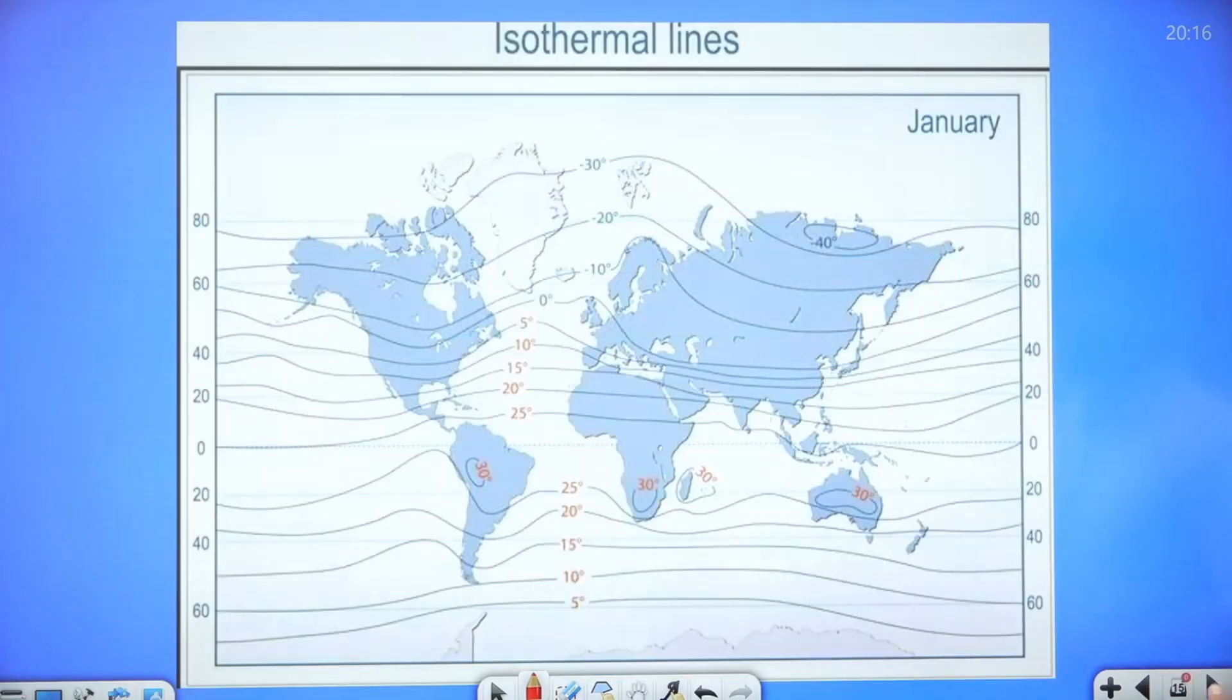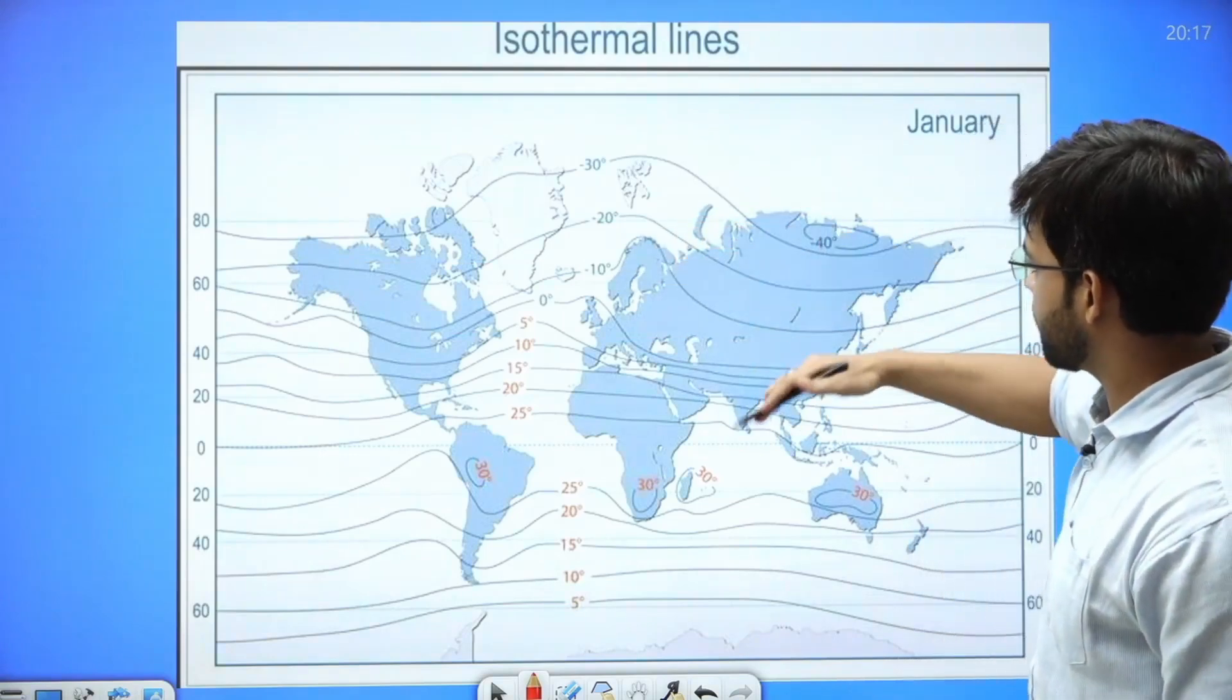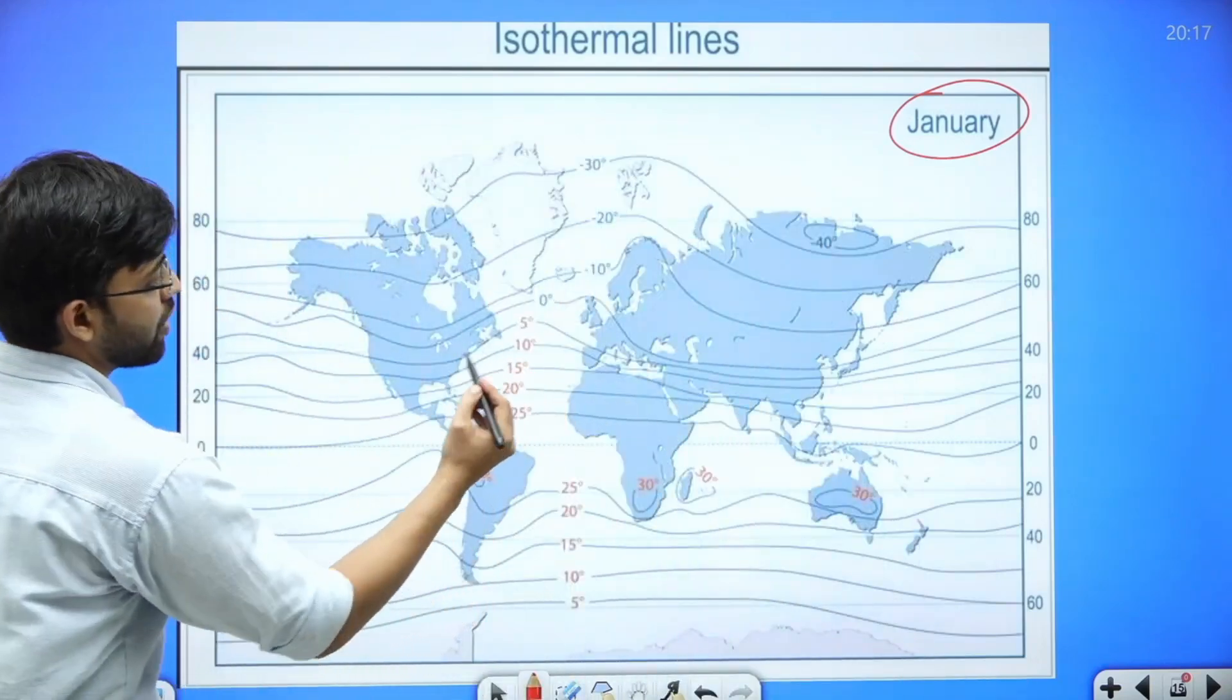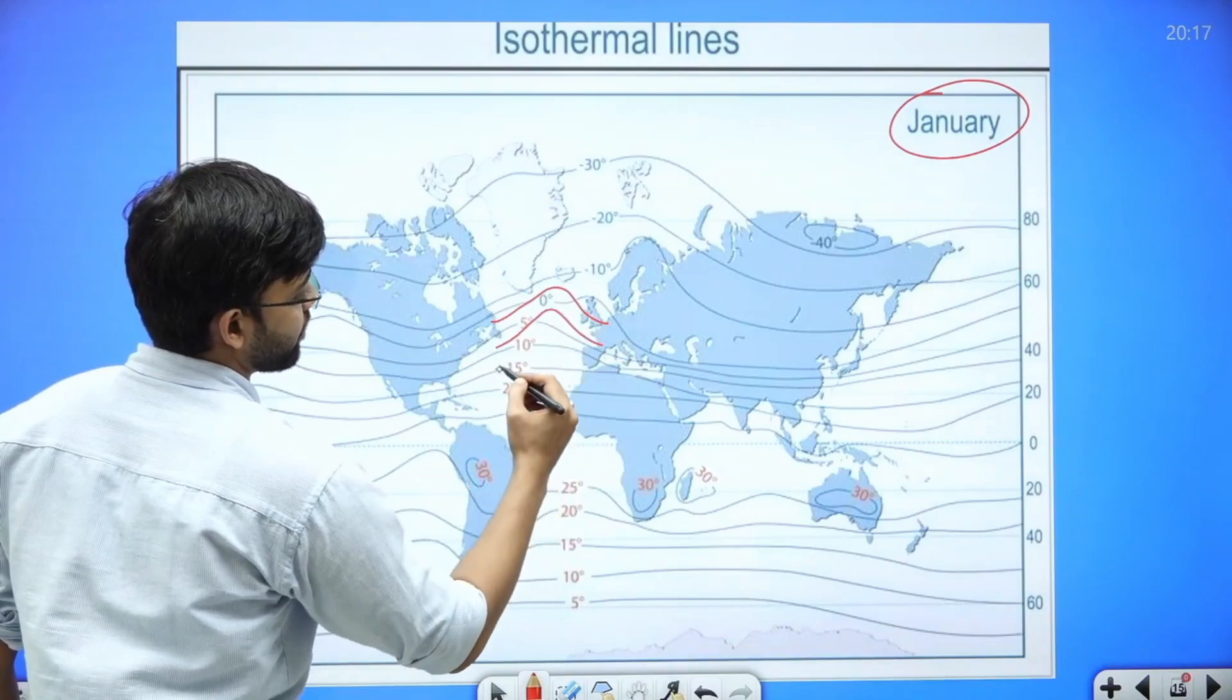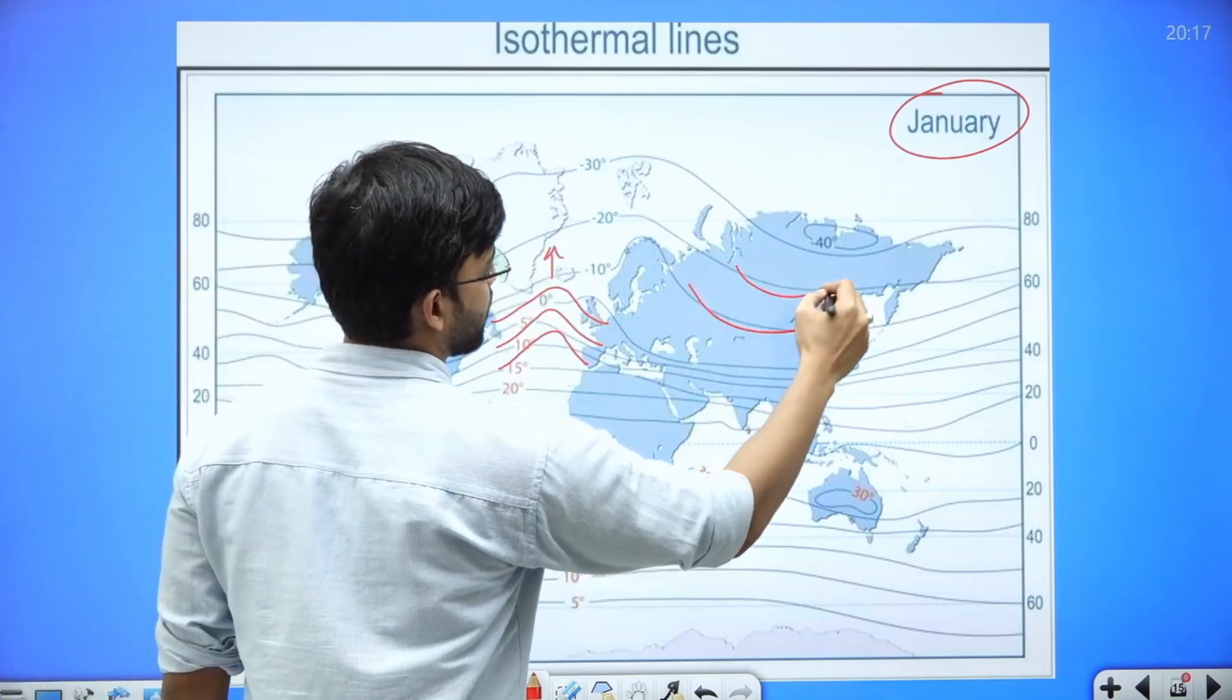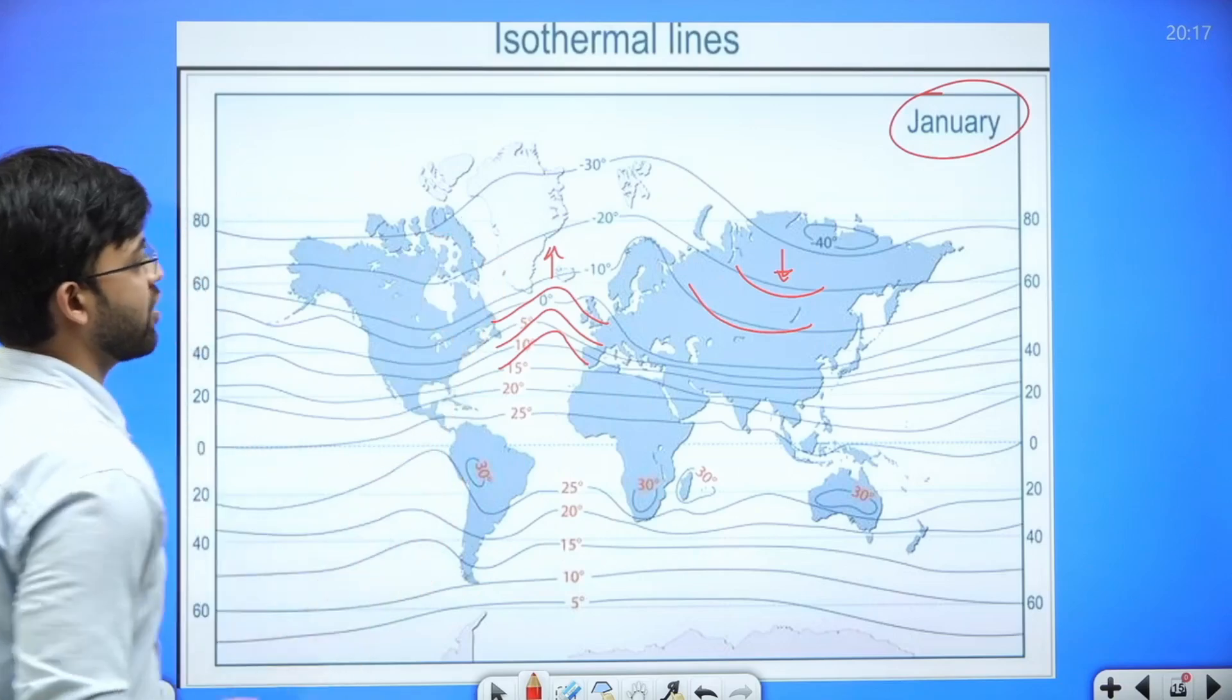If we look at the map of isothermal lines in the month of January, we can see that here the isotherms are bending towards the north, whereas it is bending towards the south in continents and in ocean it is bending towards the north.